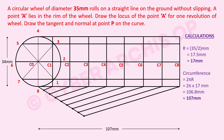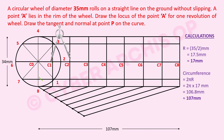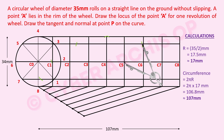Place the compass on C0 and measure the radius. Then place the compass on C1 and mark an arc on the line passing through point 1. Repeat for C2 on the line through point 2, C3 on the line through point 3, and so on for points 4 through 8. After drawing all arcs, connect all the intersection points with a freehand curve.